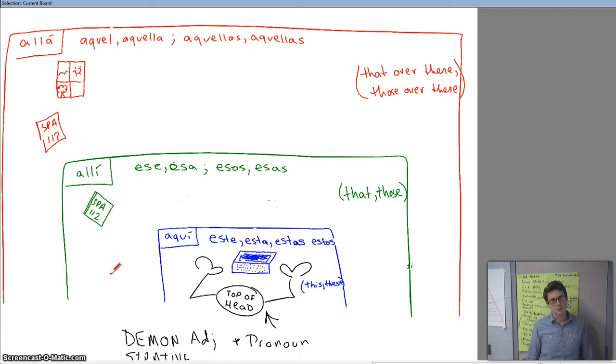You go even farther out from that, and you've got allá. And that is like saying that computer way over there, that libro, that book way over there, that window way over there. And those demonstratives are aquel, aquella, aquellos, and aquellas.